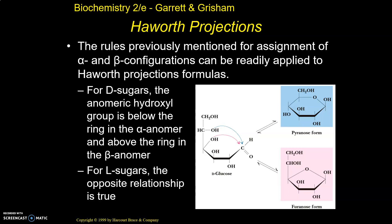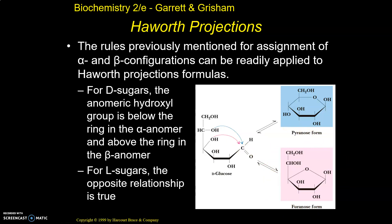So for D sugars, if this hydroxyl is on the bottom, it's going to be an alpha anomer. If it's on the top, as in both of these cases, these are going to be beta anomers. What this is also showing you is that glucose primarily forms the pyranose form, but glucose can actually form a furanose form as well — the hydroxyl from the fourth carbon attacks instead of the hydroxyl from the fifth carbon. So you can get some really interesting stuff that happens with these sugars when they go from the linear form to the cyclic form.